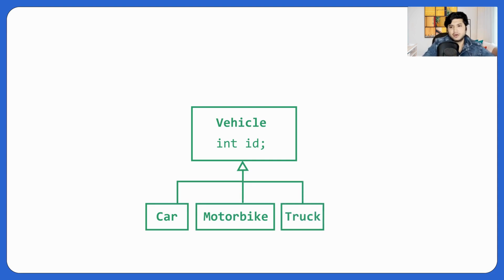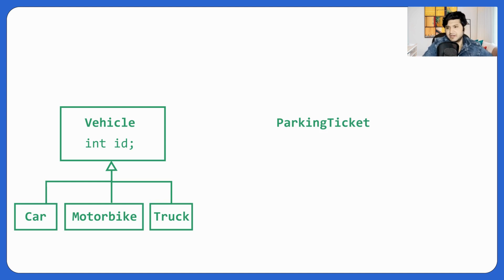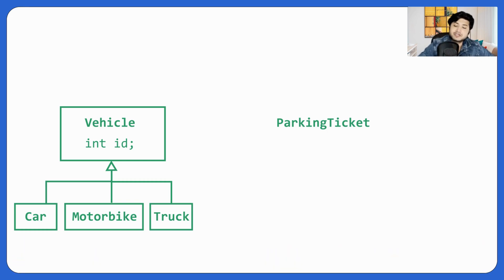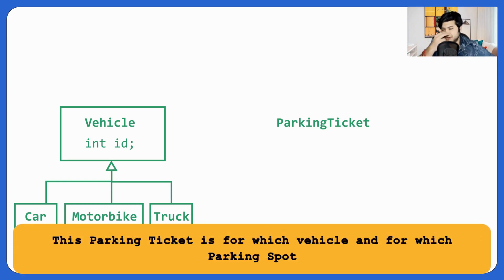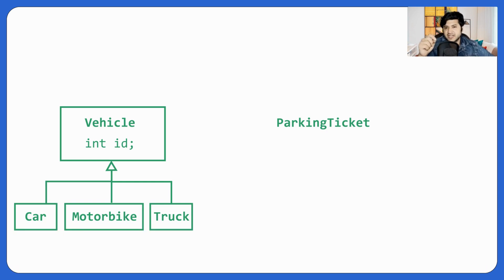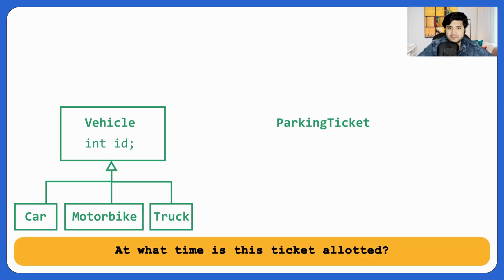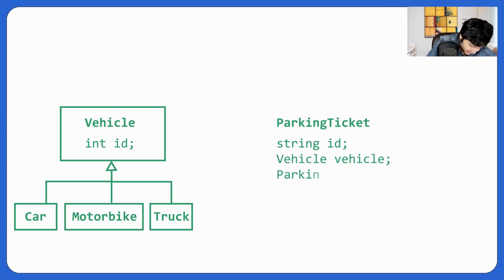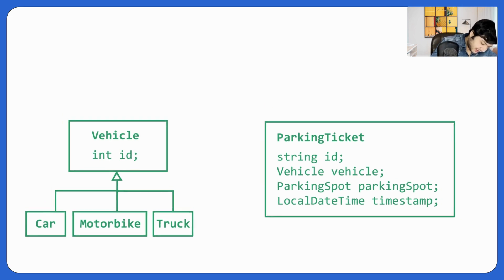We're left with ParkingTicket. What does a parking ticket contain? First, which vehicle this ticket is for. Second, which parking spot — like fourth floor, third parking spot, or second floor, second parking spot. Third, at what time the ticket was allotted. Every parking ticket will also have a unique string ID. So we have: string id, vehicle, parking spot, and a LocalDateTime timestamp for when it was allotted.